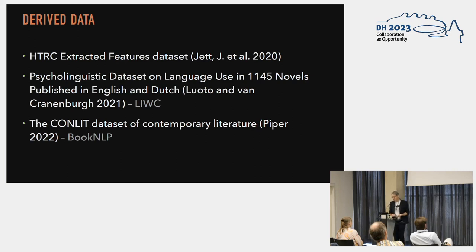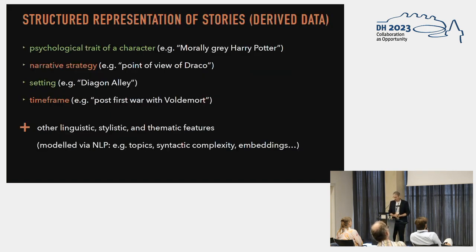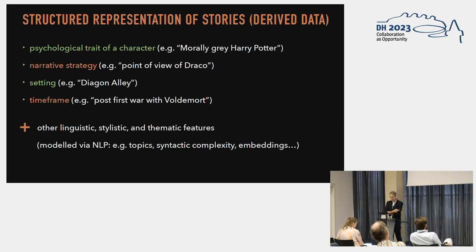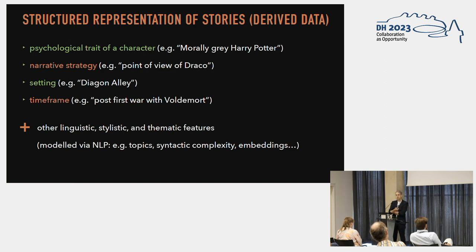The famous HathiTrust extracted features dataset is one example, but there are also a few other examples that use different tools to generate features that can be used by other researchers without access to the full text. Beyond what is already available — normally produced by the authors — we will add other things like linguistic properties, stylistic properties, and thematic features, all modeled via NLP. And an important thing we want to do is keep track of the provenance of our interpretations and the values we assign. If we assign a sentiment value or a topic, we will always describe and make sure people can trace back the original pipeline, so that competing values can be assigned for sentiment or topic depending on which methods are used.